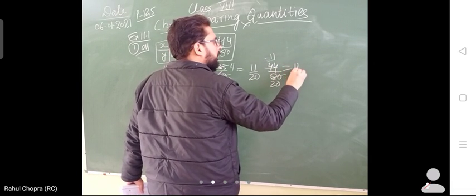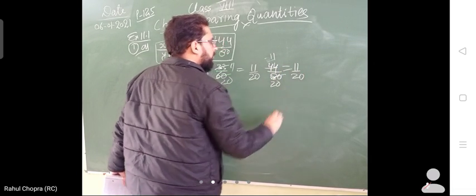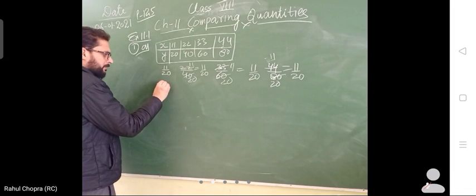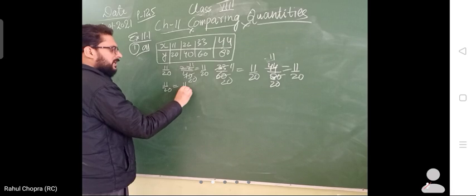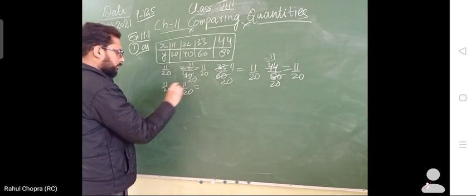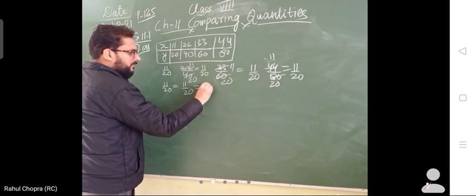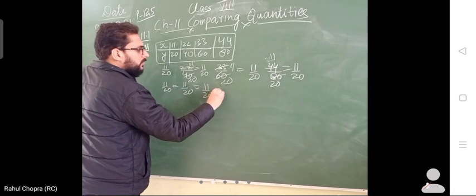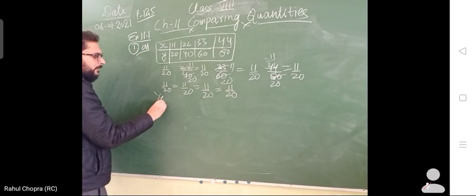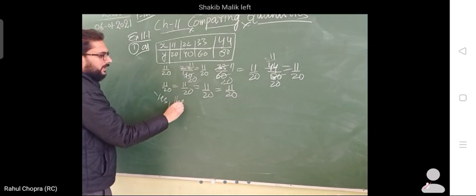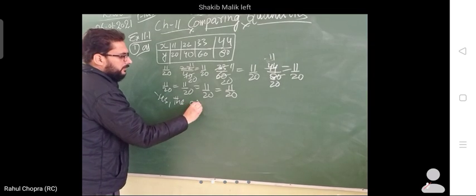It means 11 upon 20 is equal to this, 11 upon 20, this is also 11 upon 20, and this is also 11 upon 20. So we will write yes, the given quantities are in proportion.